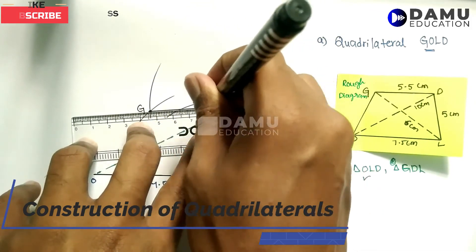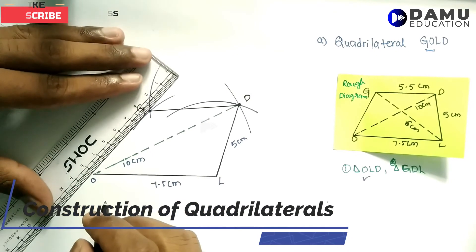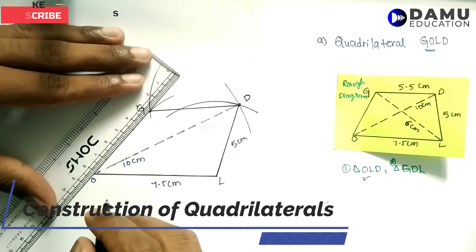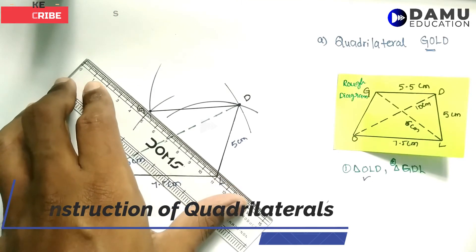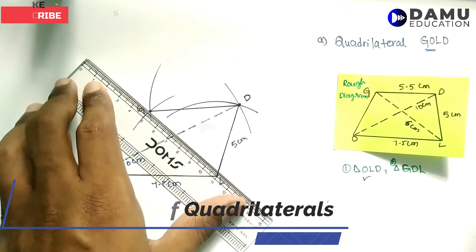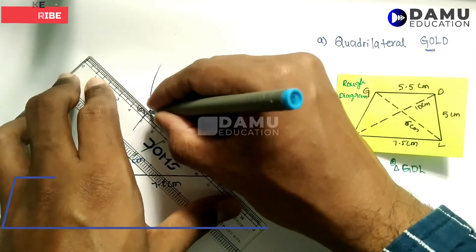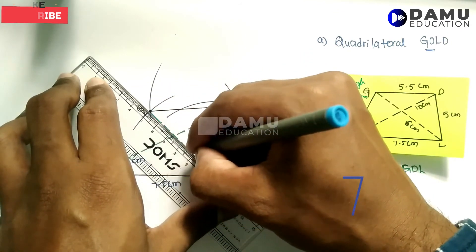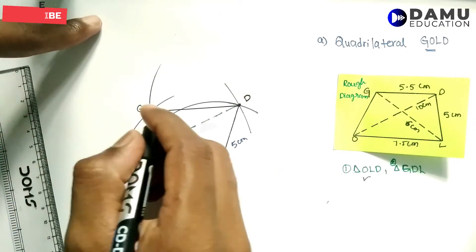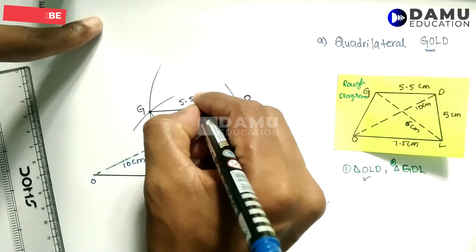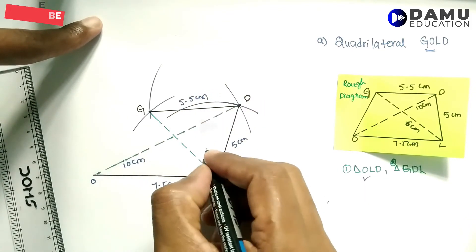Join GD. Also join OG. We need to draw one more diagonal, which is GL. The dimension GD is 5.5 cm and GL is 6 cm.